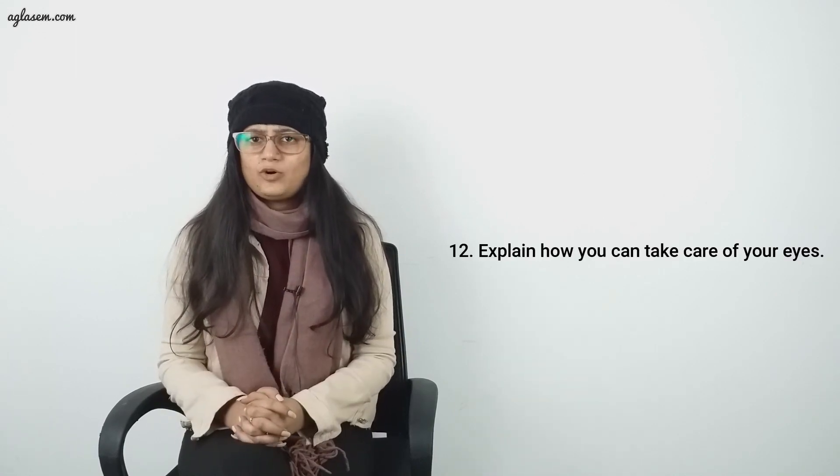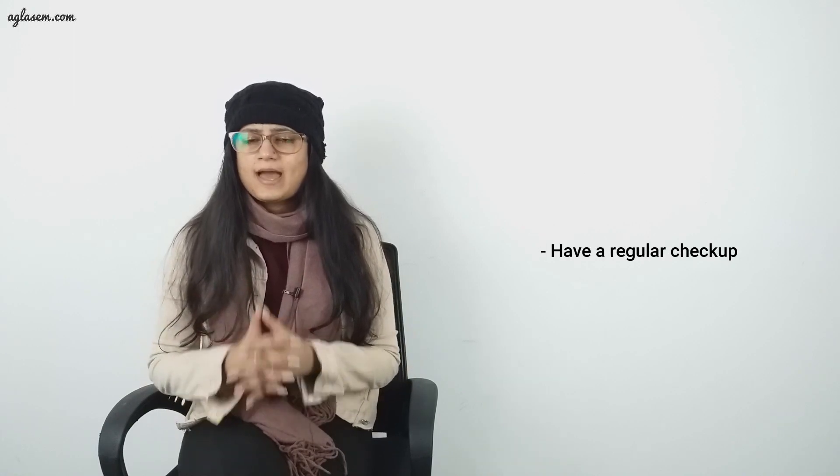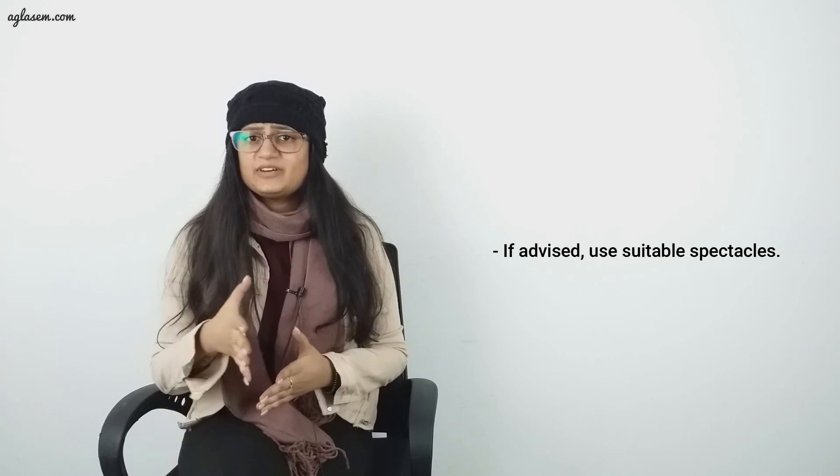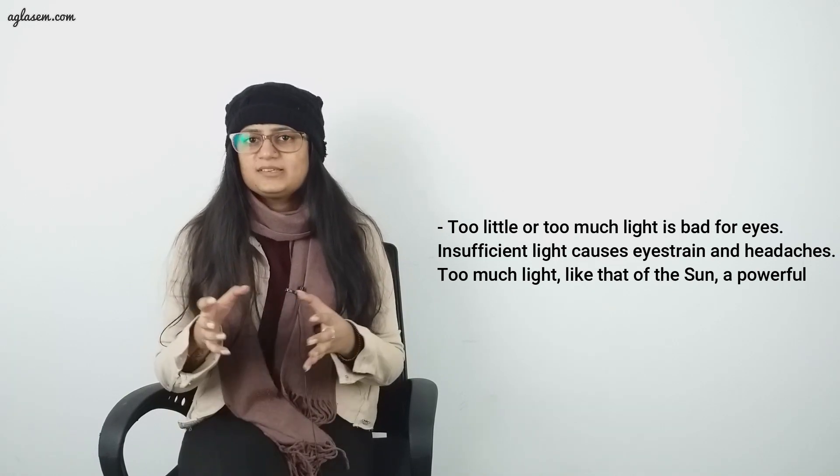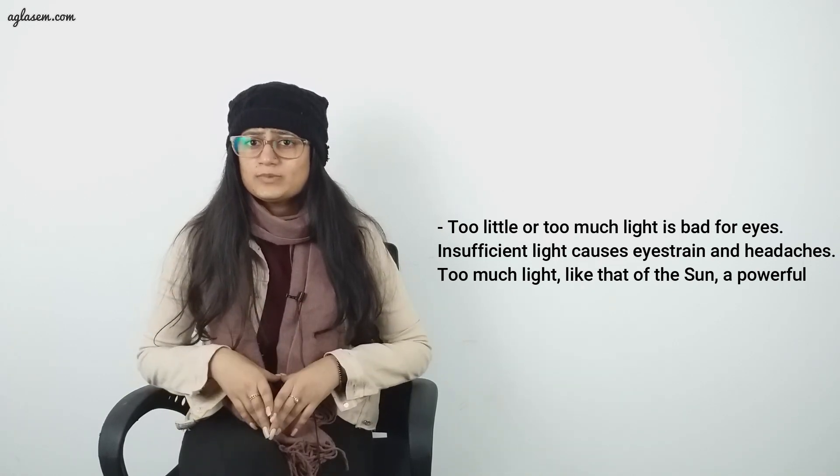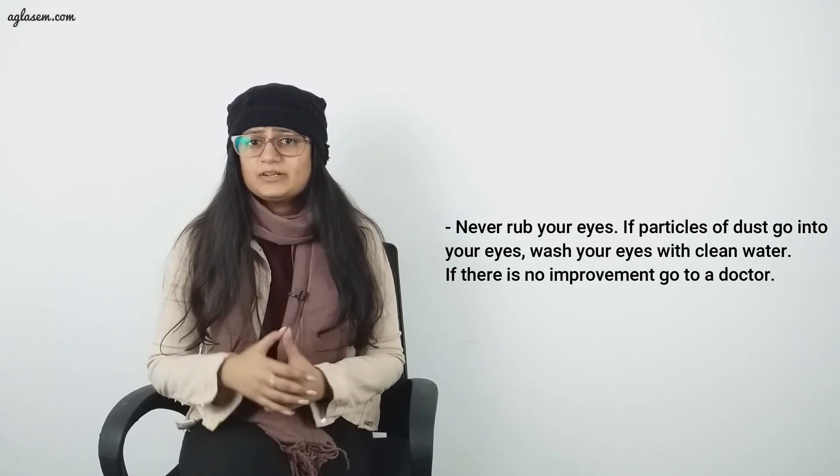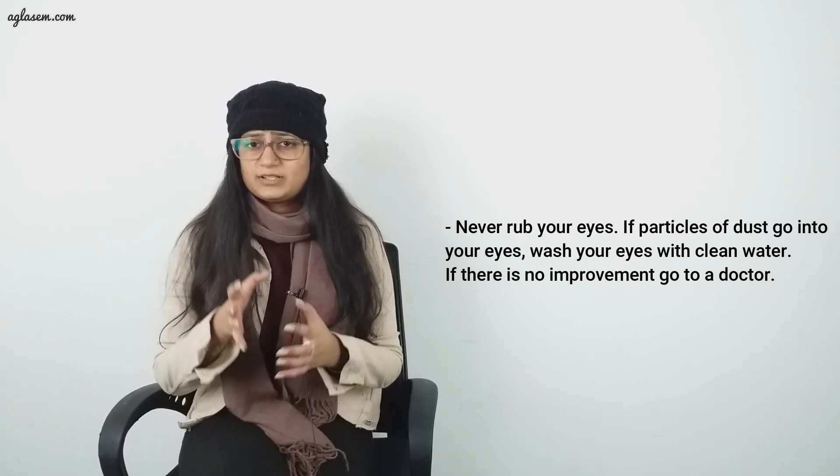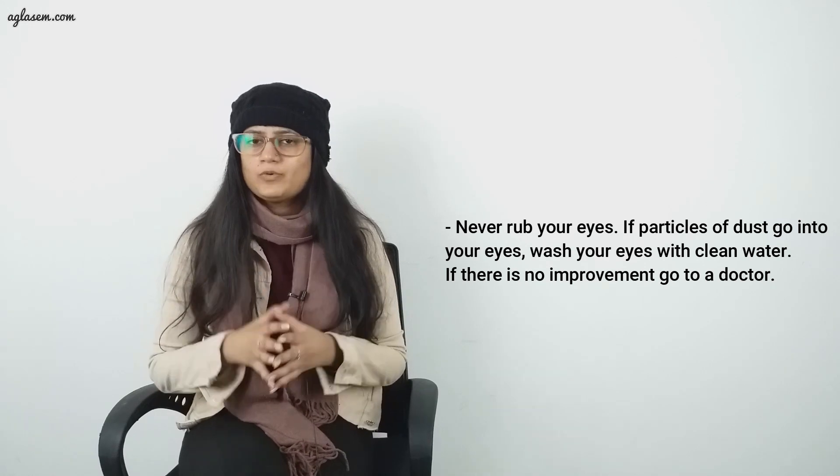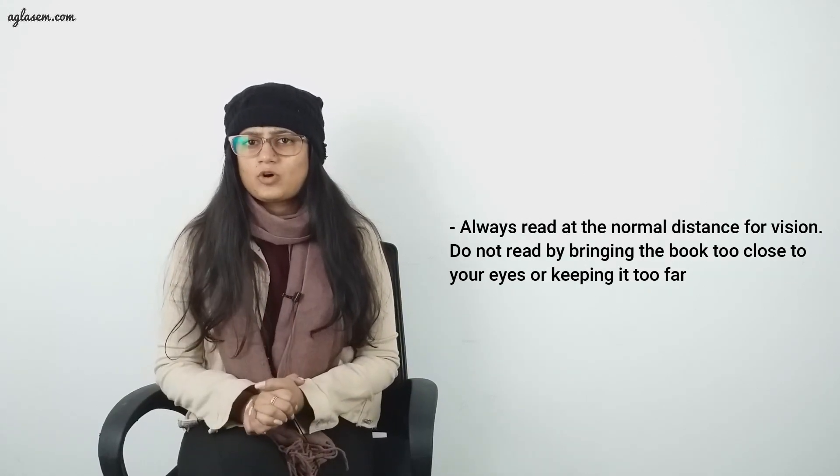Question number 12: Explain how you can take care of your eyes. Answer: It is necessary that you take proper care of your eyes. Following are the ways to take care of your eyes: 1) Have regular checkup. 2) If advised, use suitable spectacles. 3) Too little or too much light is bad for eyes. Insufficient light causes eye strain and headaches. Too much light, like that of the sun, is powerful. 4) Do not look at the sun or a powerful light directly. 5) Never rub your eyes. If particles of dust go into your eyes, wash your eyes with clean water. If there is no improvement, go to a doctor. And lastly, always read at the normal distance for vision. Do not read by bringing the book too close to your eyes or keeping it too far.